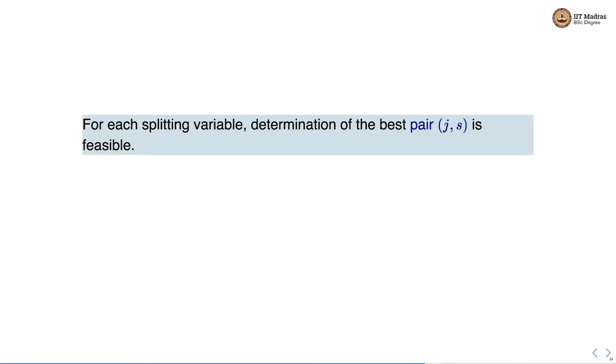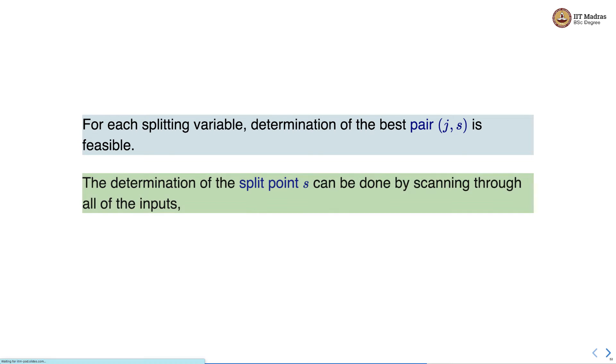For each splitting variable determination of the best pair j, s is feasible. The determination of the split point s can be done by scanning through all of the inputs.